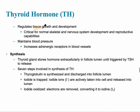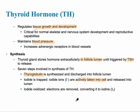Thyroid hormone affects tissue growth, development, and blood pressure — essentially everything in the body. The thyroid gland stores hormone in the follicle until triggered by TSH, which is released from the anterior pituitary and binds to receptors in the thyroid gland. To synthesize thyroid hormone, thyroglobulin is synthesized and discharged into the follicle. Iodine is actively trapped and taken into the cell. This is why after a radioactive event such as a nuclear meltdown, you take iodine supplements — so the thyroid uses non-radioactive iodine.